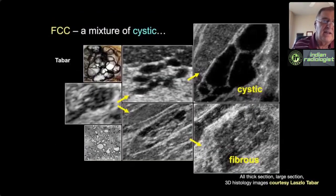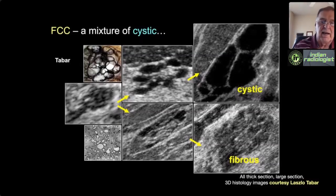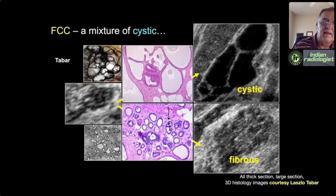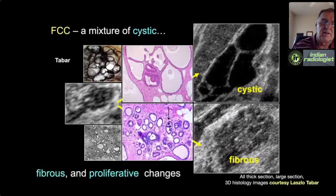Fibrocystic change usually includes a mixture of benign proliferative disorders like usual duct hyperplasia, apocrine metaplasia, and fibrosclerosis. If we go down the primarily cystic pathway, it's easier to call things benign. If we take the pathway with more benign proliferative things, it's harder—we get more false positives. This is usually because the microcysts are too small to resolve.